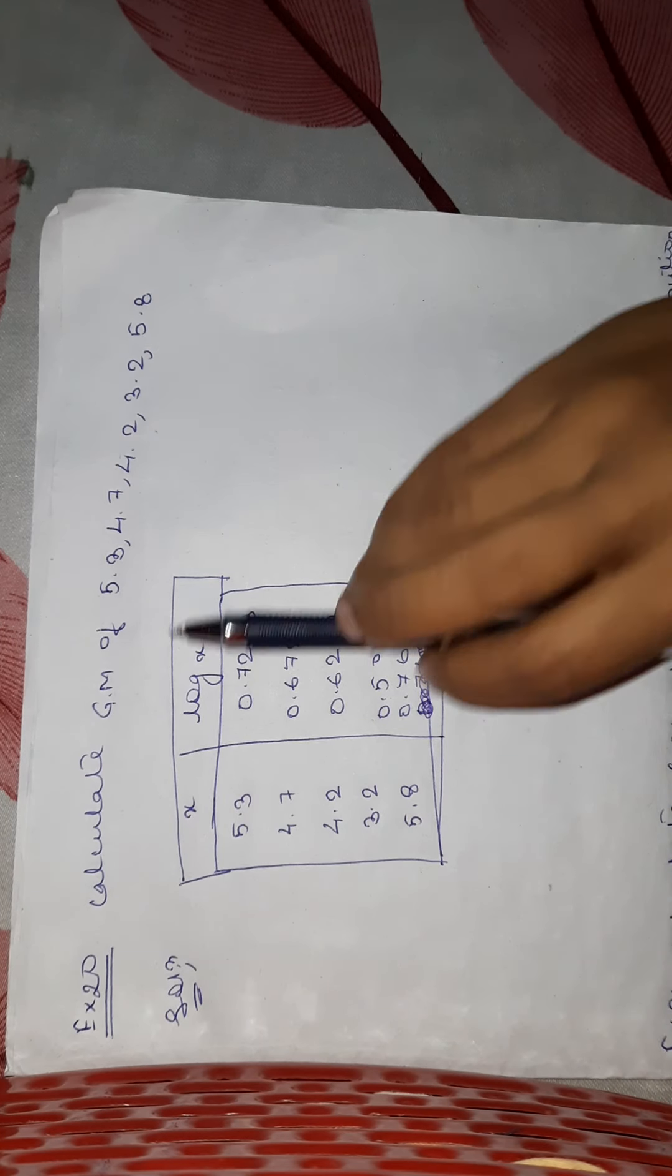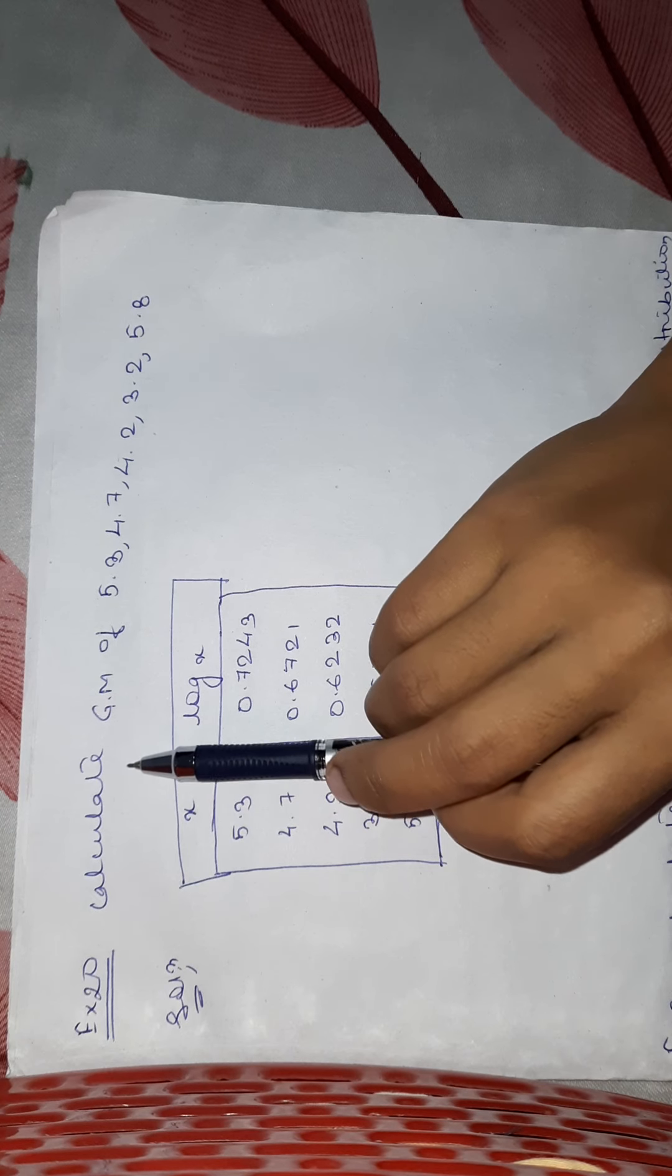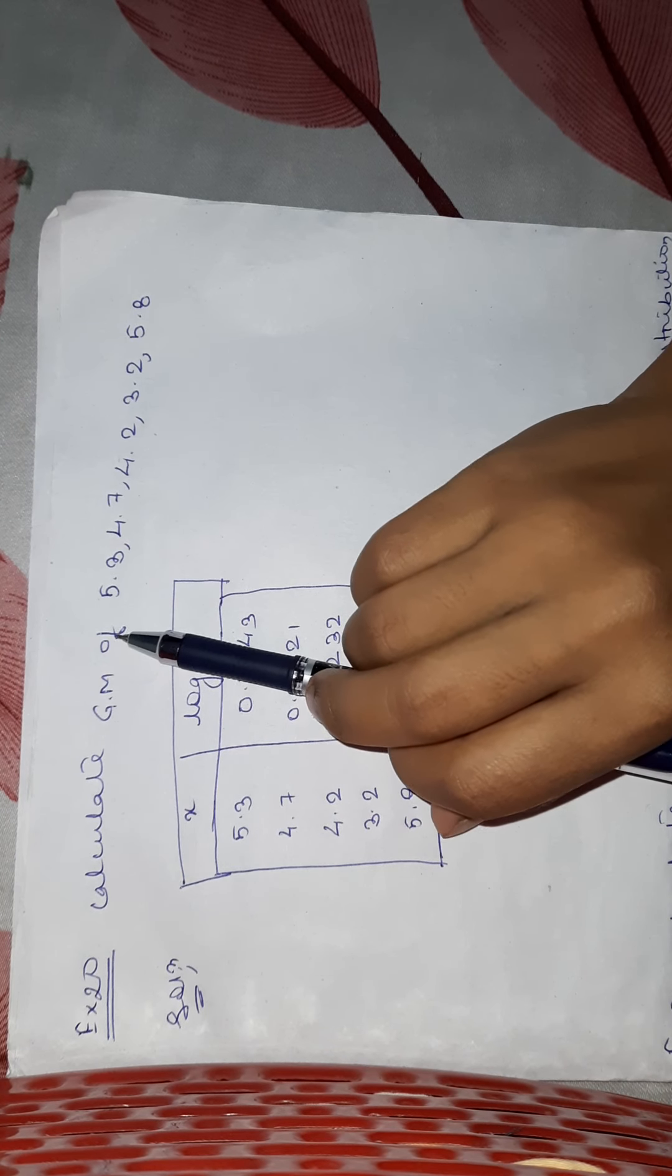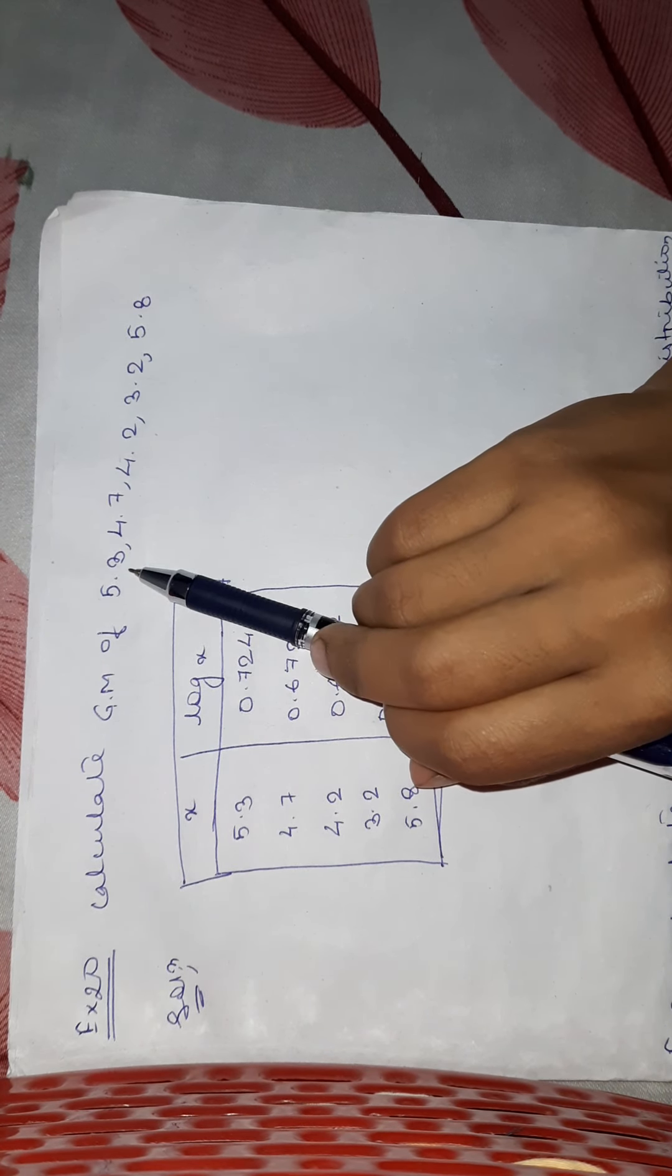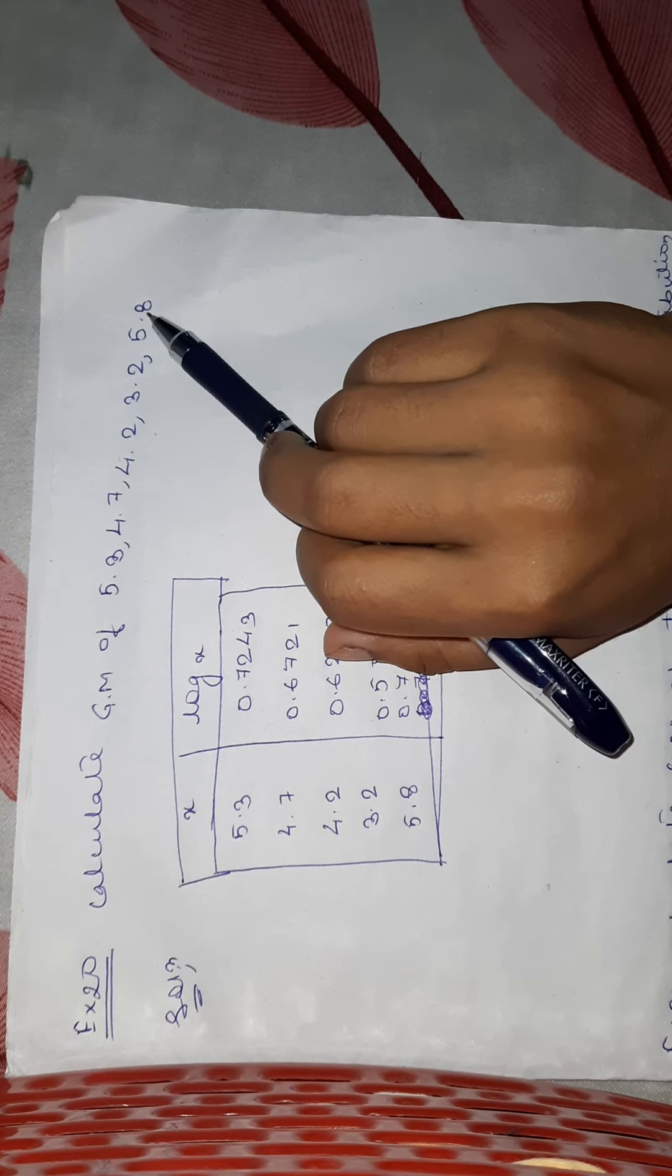Dear students, this is an example of geometric mean. It is given that calculate geometric mean of values 5.3, 4.7, 4.2, 3.2 and 5.8.